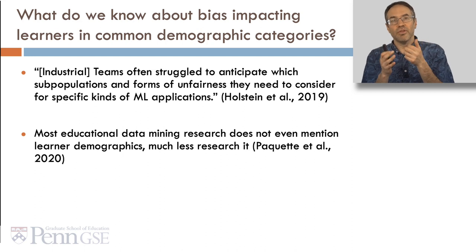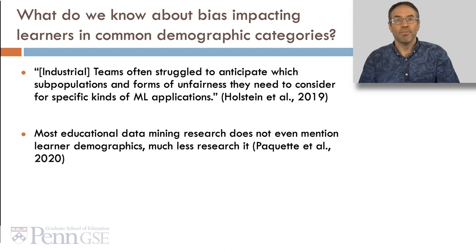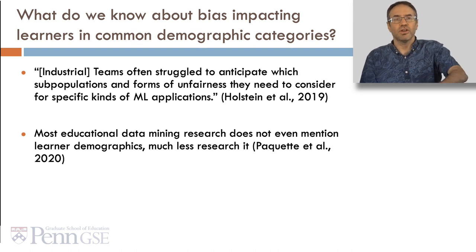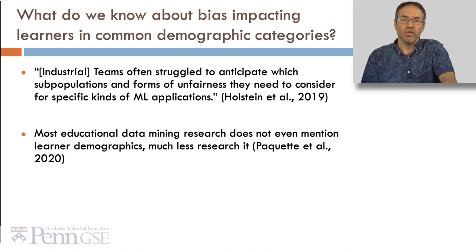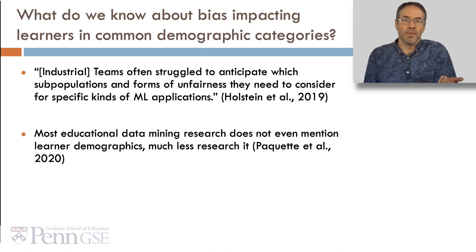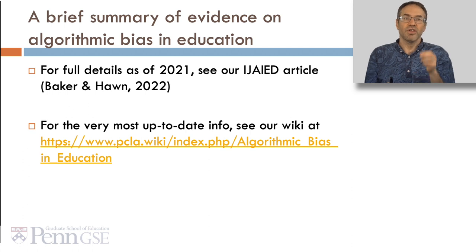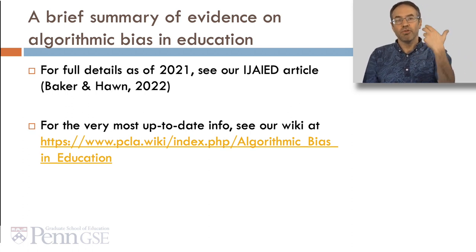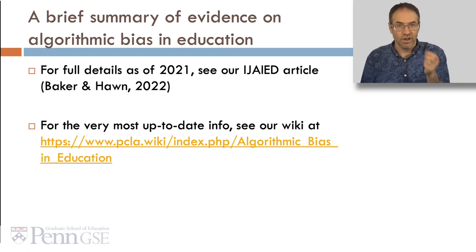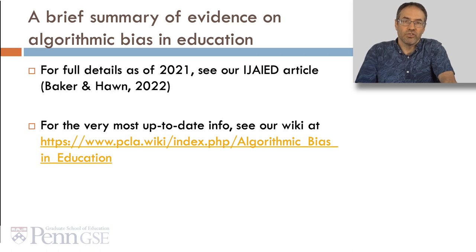So we've talked about sources of potential algorithmic bias in education. What do we know about bias impacting learners in common demographic categories? In fact, we don't know as much as we'd like to. Holstein and colleagues note that industrial teams often struggle to anticipate what subpopulations are impacted and what forms of unfairness they experience for specific machine learning applications. And most educational data mining research doesn't even mention learner demographics, much less investigate algorithmic bias — see a review by Luc Paquette. For full details as of 2021, see our article in the International Journal of Artificial Intelligence and Education, and for the most up-to-date info, see our wiki.